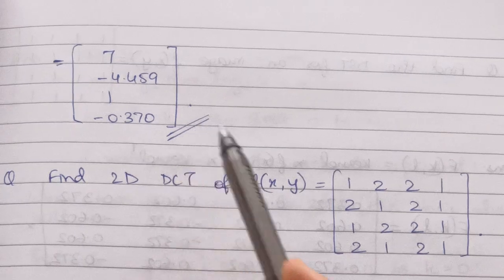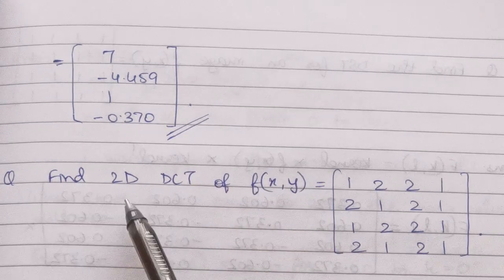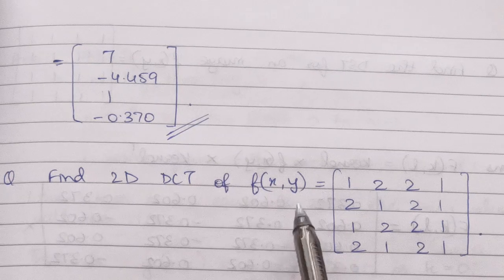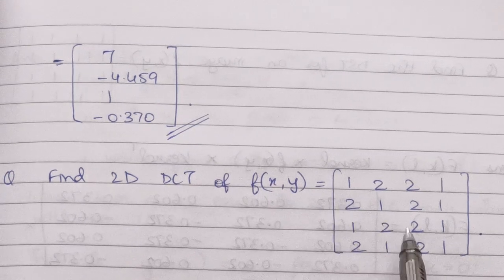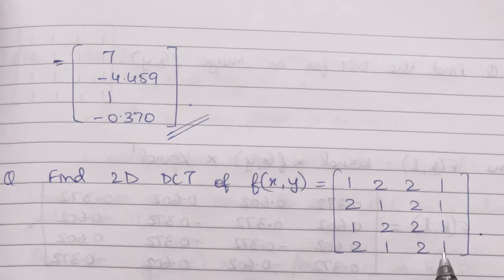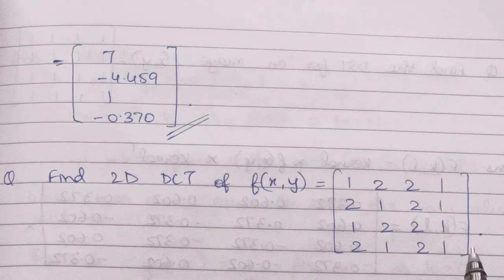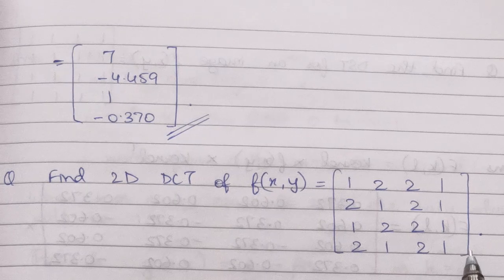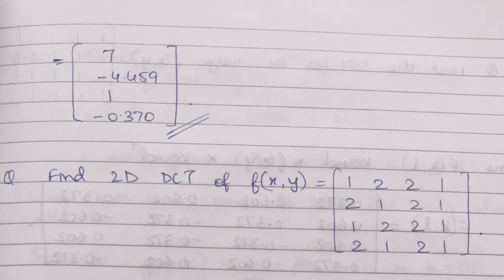Let's look at one more question: Find 2D DCT of f(x,y) equal to this matrix. As you can see, this is a four by four matrix, so the kernel we'll be using again will be our same four by four kernel.